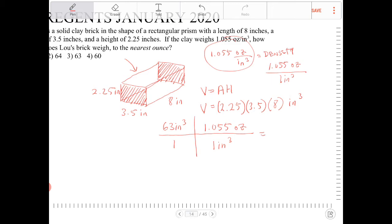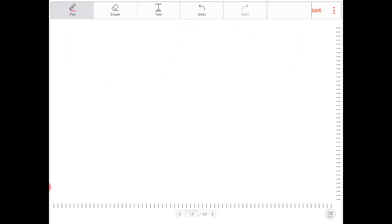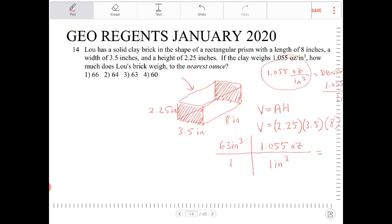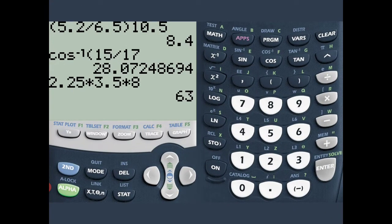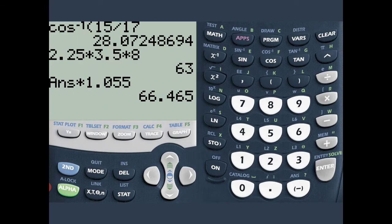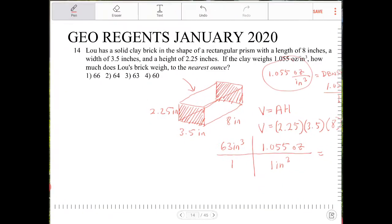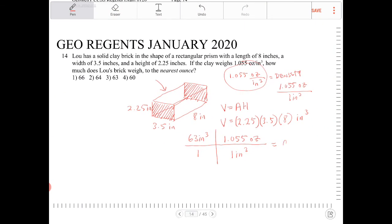So let's take a look at what that is. So 63 times 1.055, that would be 66.465, and ounces.